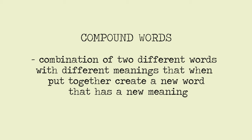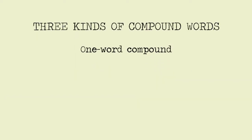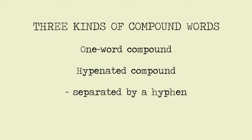We have three kinds of compound words. The first one is what we call a one-word compound. Number two is the hyphenated compound — our clue here is that they are separated by a hyphen. And the third one is a two-word compound.